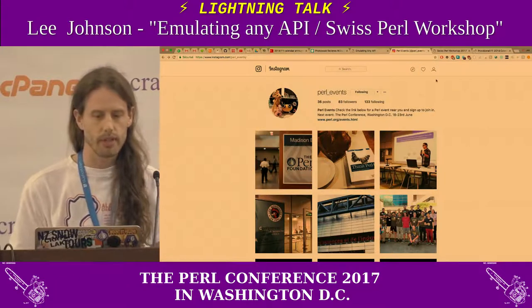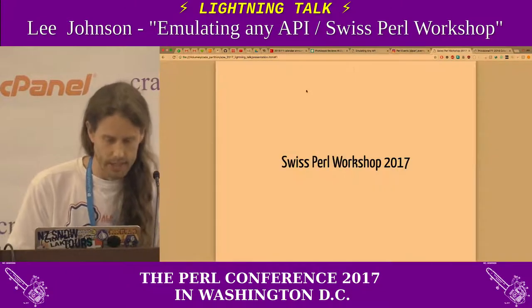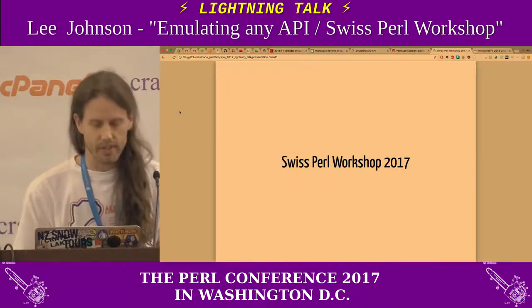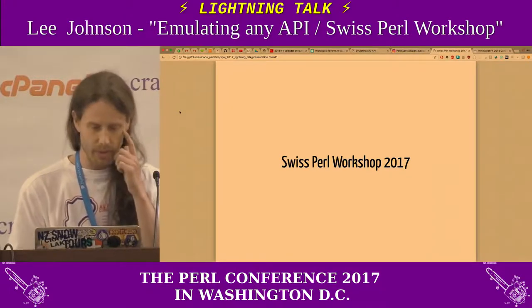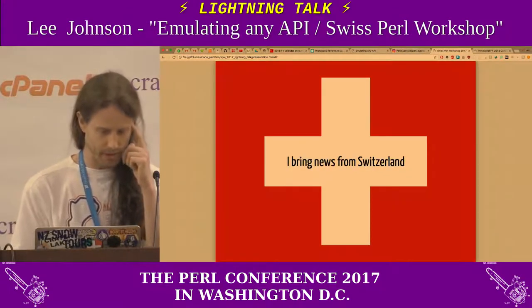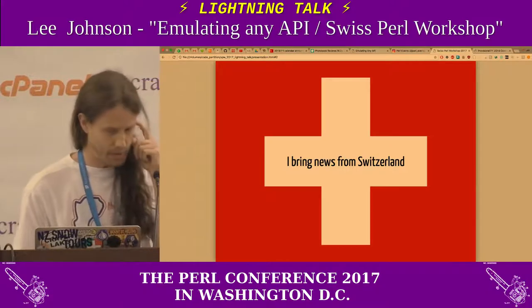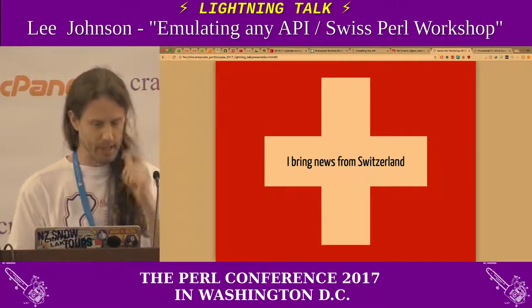The last lightning talk is about the Swiss Pearl workshop this year. There are two deliberate mistakes in this lightning talk — the first one is that the flag is not a rectangle, it's a square. So hopefully that won't have any impact on me getting a permit.